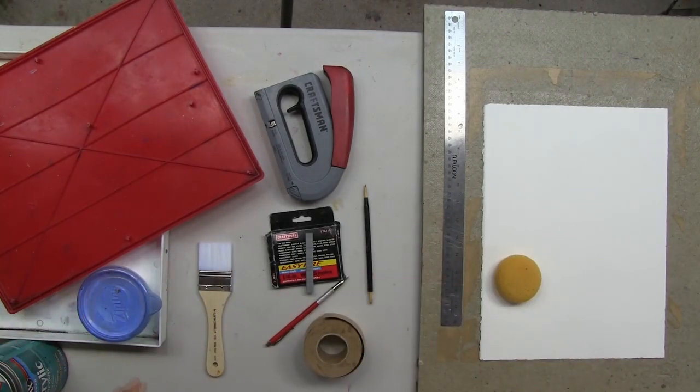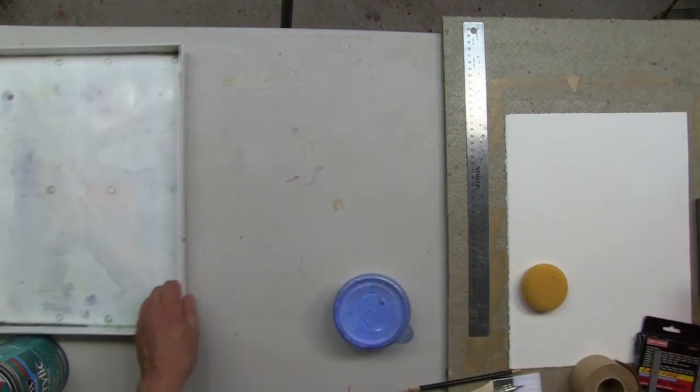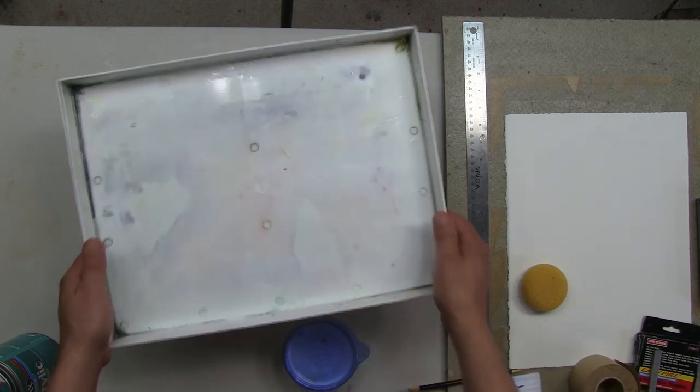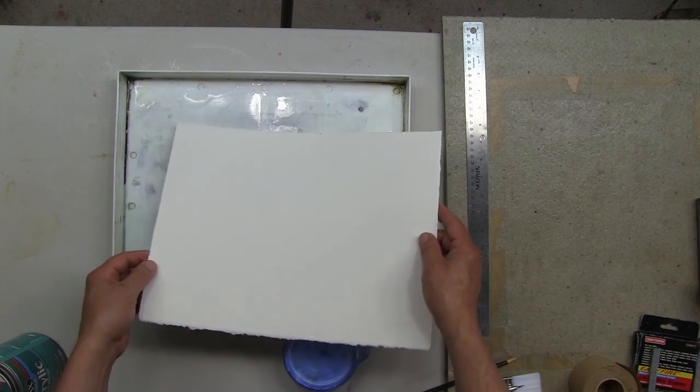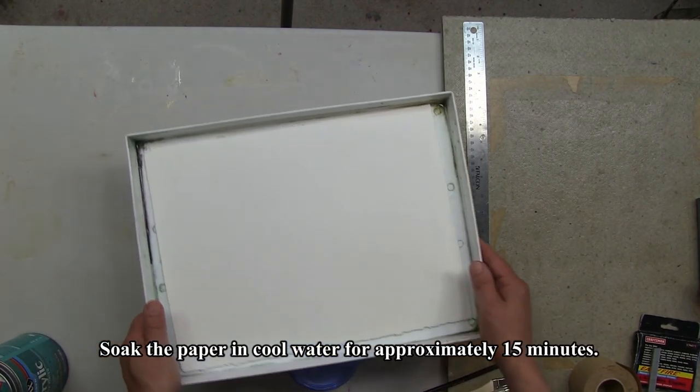Now, let's clear all this away and begin to stretch the paper. The first thing that I need to do is place my paper in the soaking bin. Bring it over to the sink and fill it up with some water.